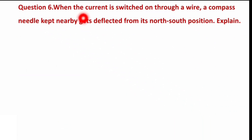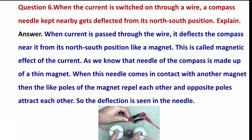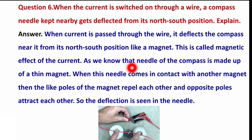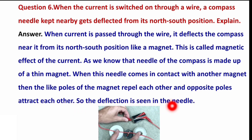Next question: when the current is switched on through a wire, a compass needle kept nearby gets deflected from its north-south position — explain. We discussed this activity in the chapter. The answer is: when current is passed through the wire, it deflects the compass needle from its north-south position like a magnet. This is called the magnetic effect of current. The needle of a compass is made up of a thin magnet. When this needle comes in contact with another magnet, like poles repel and opposite poles attract each other, so deflection is seen.